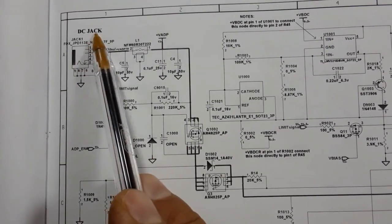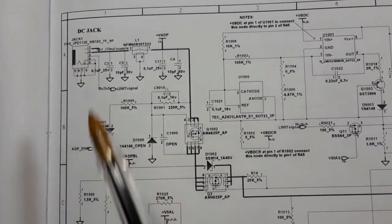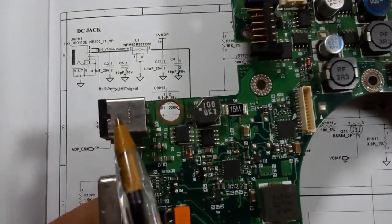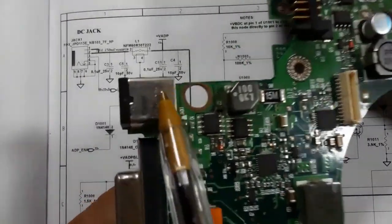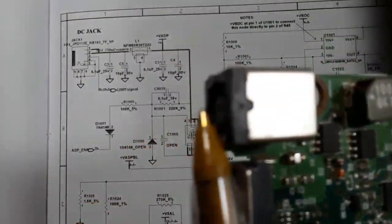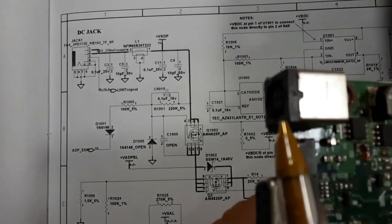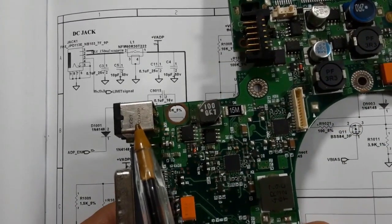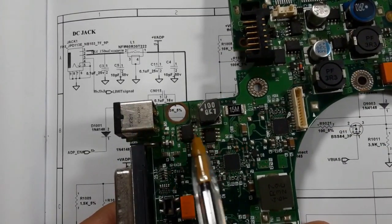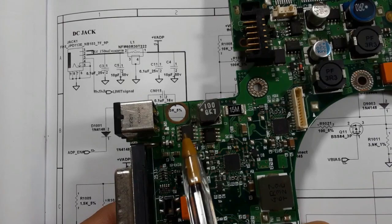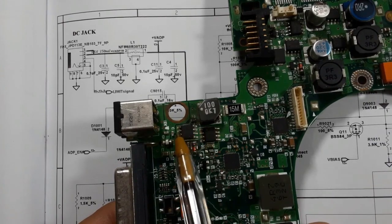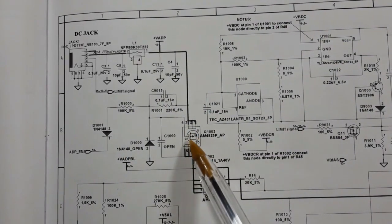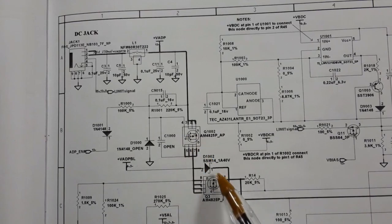This is the power jack — a DC jack, exactly like the one shown here. This is where we plug in the adapter. We have here two switches, exactly like these two switches shown.